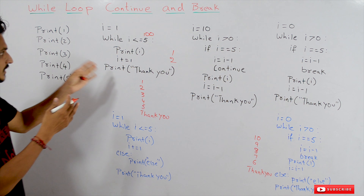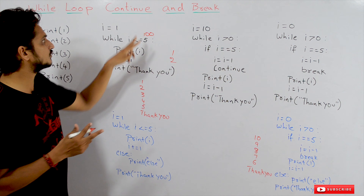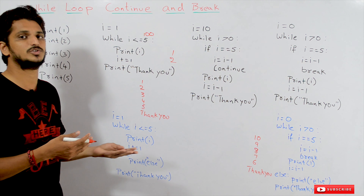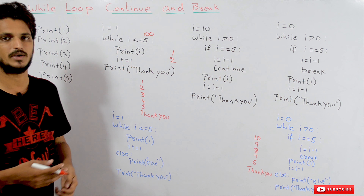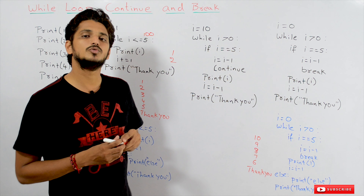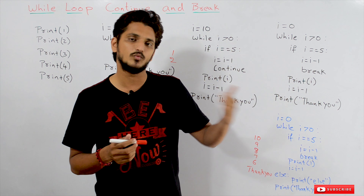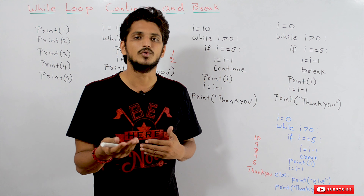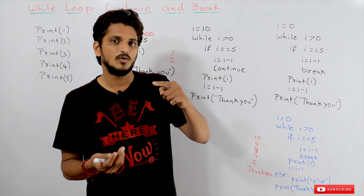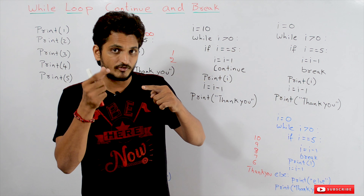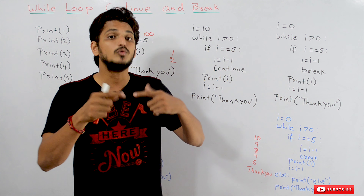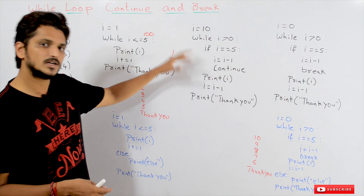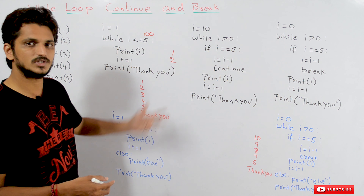So we can control this loop using two statements: the continue statement and the break statement. Let's take an example and understand what continue does and what break does. For continue: if someone asks you to display the numbers from 10 to 1 but don't display the number 5, what do we do? We have to skip that iteration using the continue statement.